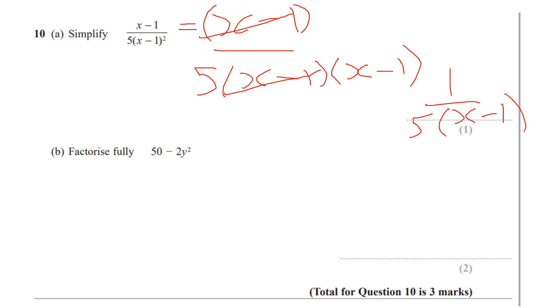This next one, factorize fully. So watch out because the examiners love putting these questions in. Pull out a factor of 2 first. So 2 brackets, 25 minus y squared. We have a hidden difference of 2 squares here.